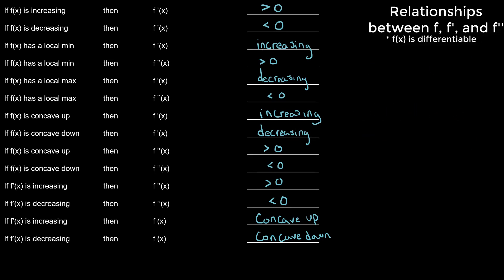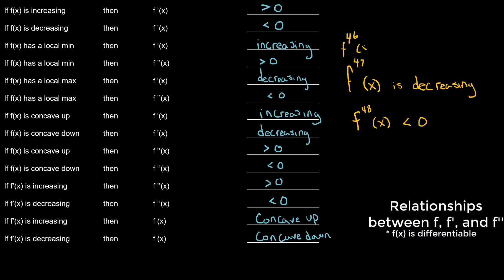Let's say the 47th derivative of a function is decreasing. If the 47th derivative is decreasing, this should automatically mean that the next derivative is negative — so the 48th derivative of x is less than zero. And working backwards: if the 47th is decreasing and its second derivative is negative, that means the 46th derivative must be concave down.